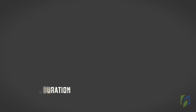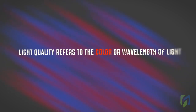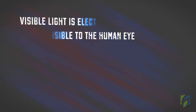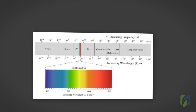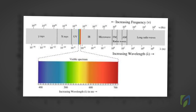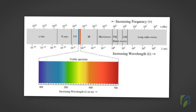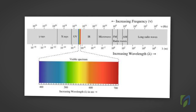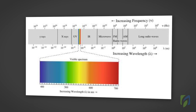What is light quality? Light quality refers to the color or wavelength of light. Visible light is electromagnetic radiation that is visible to the human eye, consisting of wavelengths in a range from about 380 nanometers to about 740 nanometers. The visible light range is located between the invisible infrared, found at longer wavelengths, and the invisible ultraviolet, found at shorter wavelengths.